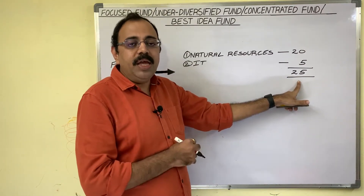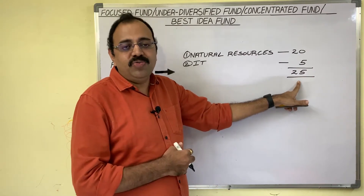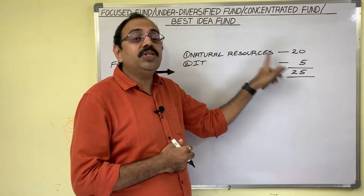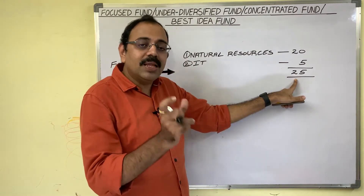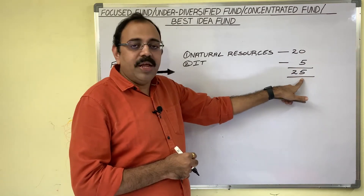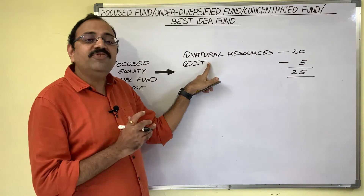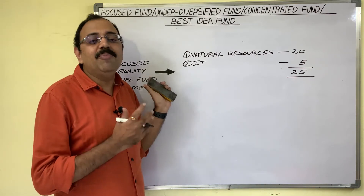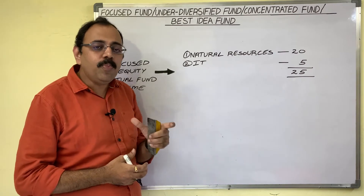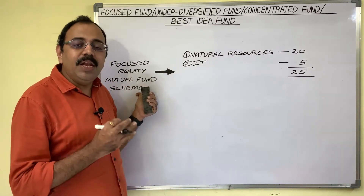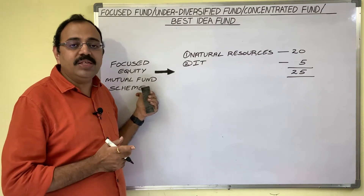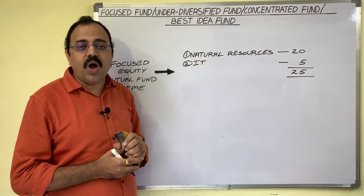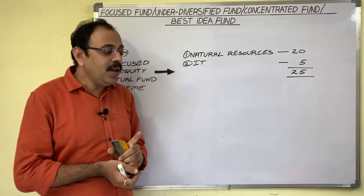The fund manager creates a portfolio with stocks of a limited number of companies — a maximum of 30 companies. In other equity mutual funds, the portfolio holds stocks of around 50 to 100 companies, but in focused funds this number is restricted to 30. These companies also belong to a limited number of sectors — maximum three sectors. As per SEBI guidelines, a minimum 65% of the corpus should be invested in these focused sectors.